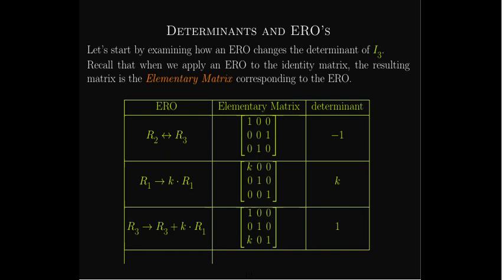If we swap two rows — say R2 and R3 — the determinant of the new matrix is negative 1. If we replace a row with a scalar multiple of itself by k, the determinant changes from 1 to k. For a type 3 operation — replacing row 3 with the sum of itself and k times row 1 — that only changes an off-diagonal entry, so the determinant doesn't change at all. We're finding the determinant by multiplying the diagonal entries.